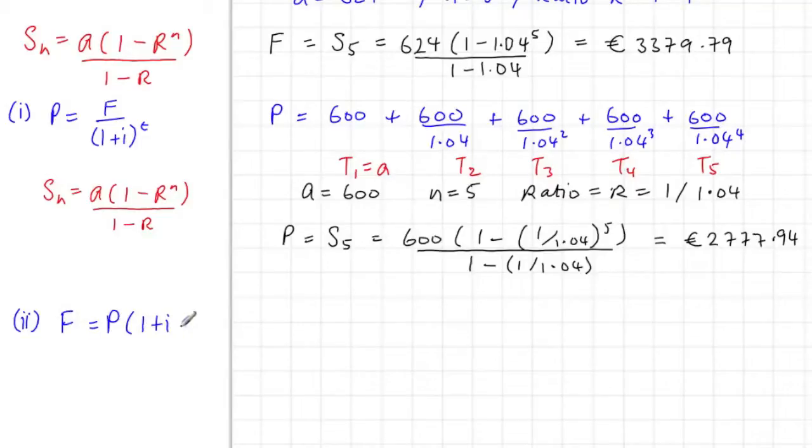This time we're looking at the future value. We're trying to see, looking at this amount here of 2777.94, if that's the present value and if it's been earning interest at 1.04 for 5 years, we're wondering would it amount to the answer we got in part 1, would it have the same future value?